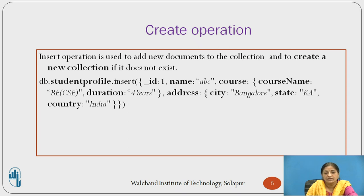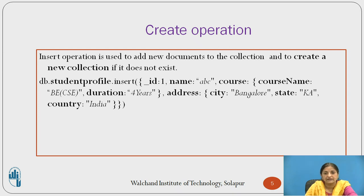Name is set to 'abc'. Course is a composite field consisting of course_name 'BECSC' and duration '4 years'. Address is also a composite data type consisting of city, state, and country — city is Bangalore, state is KA, and country is India. In this way, a new document has been created in the student_profile collection using the insert operation.